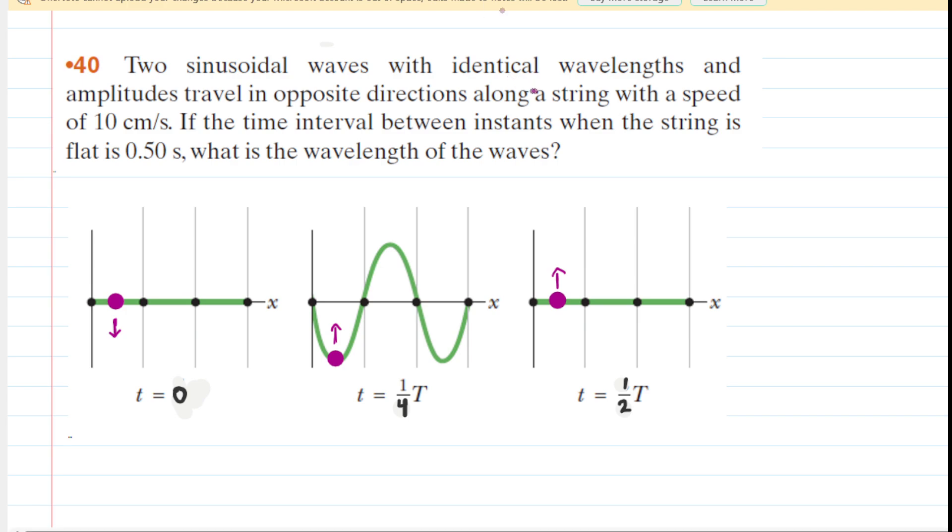Here we have two sinusoidal waves that have identical wavelengths and identical amplitudes that happen to be traveling in the opposite directions. And under those very special circumstances, what is produced is a standing wave.